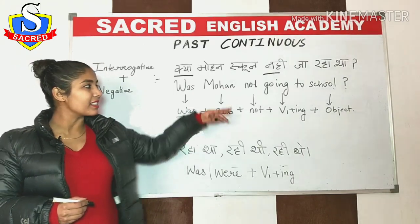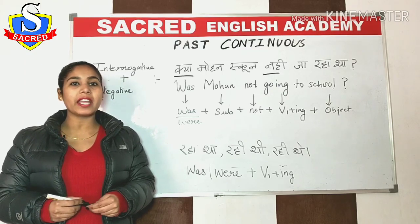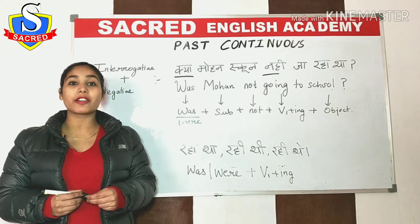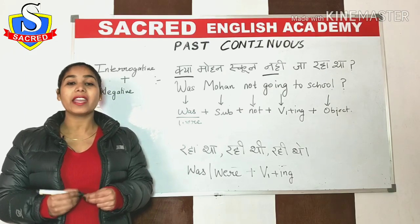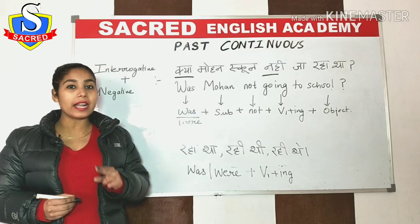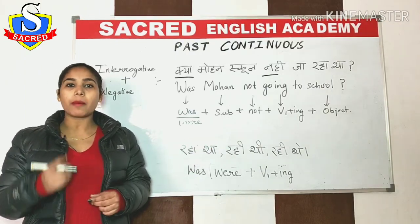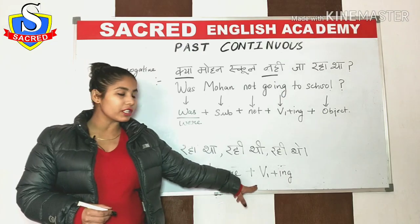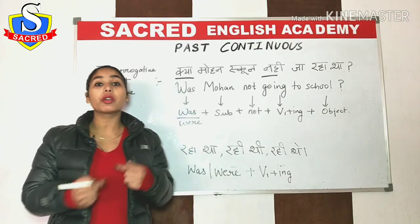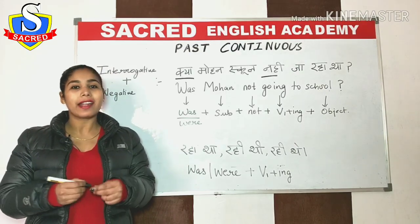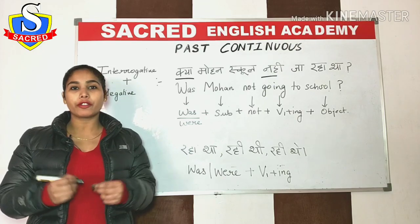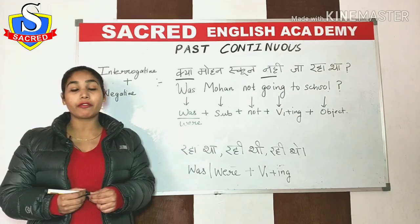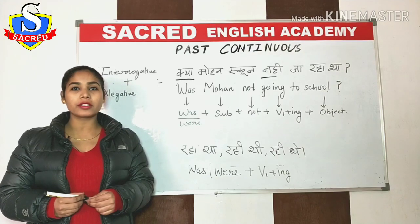Now let's revise. All four sentence types are complete: affirmative, negative, interrogative, and interrogative plus negative. Remember, for past continuous tense use 'was' or 'were' with the verb's first form plus -ing. The -ing is very important as it shows continuity. Use 'was' with he, she, it, and I; use 'were' with we, you, and they.